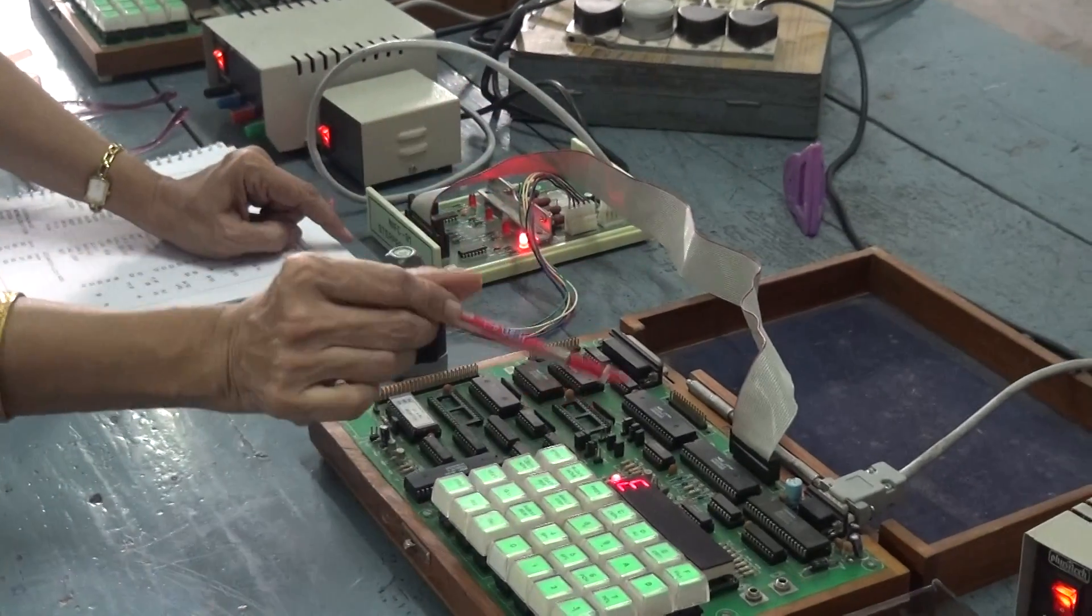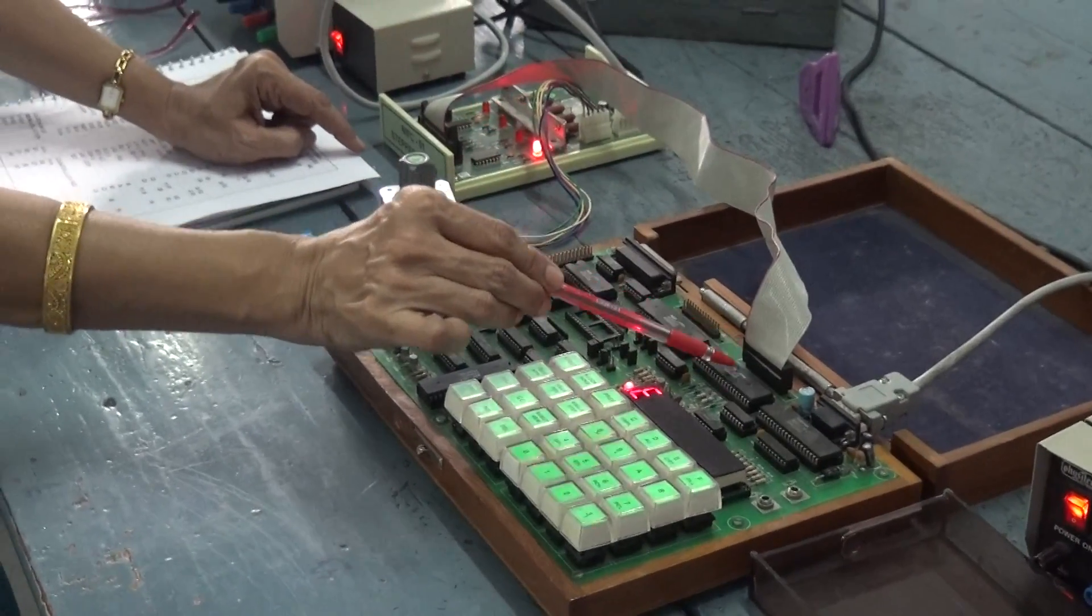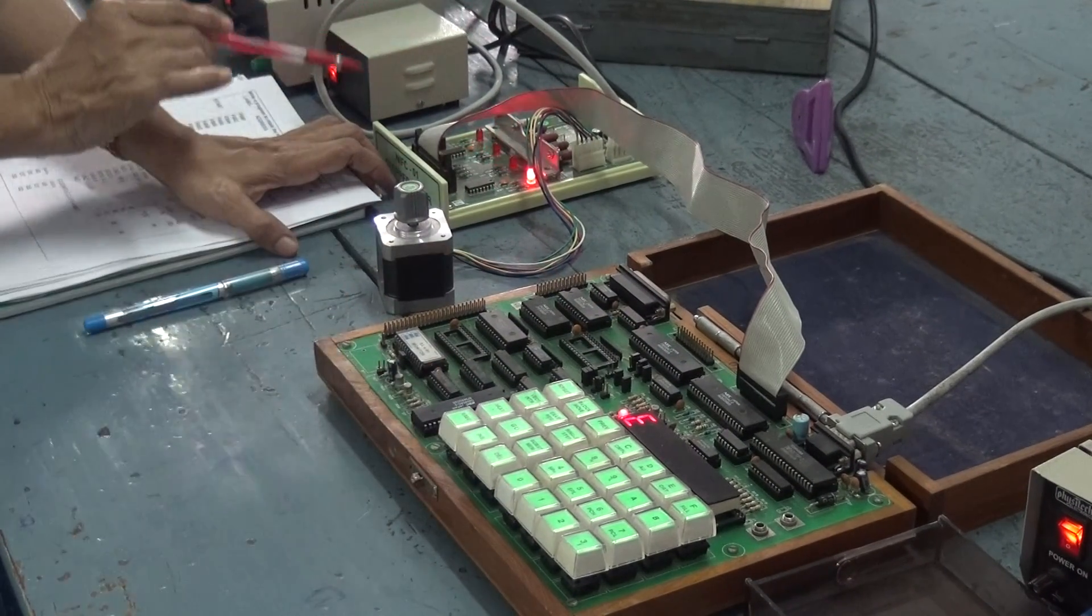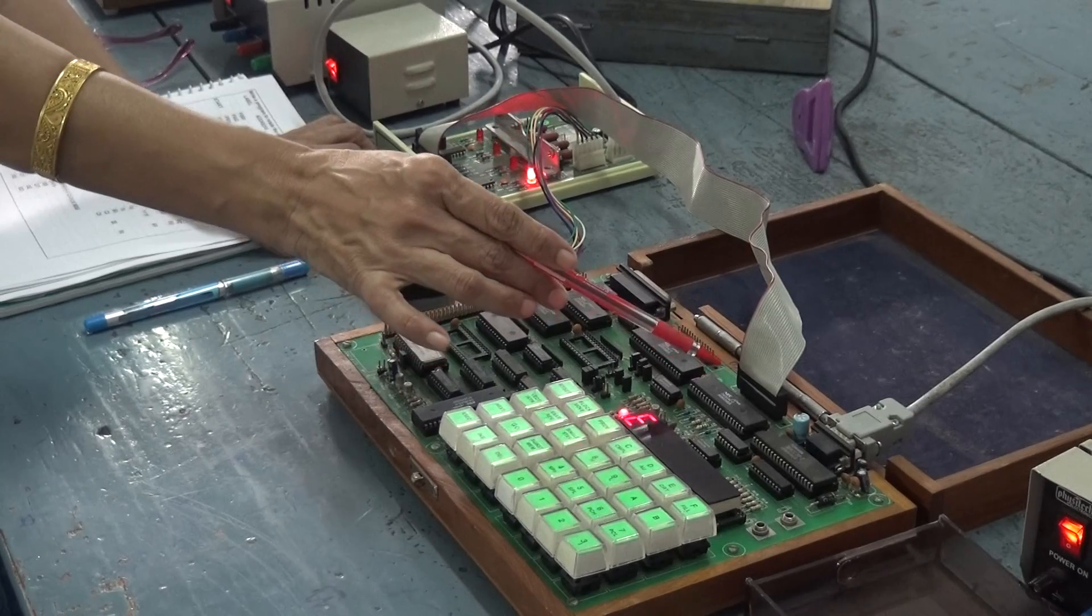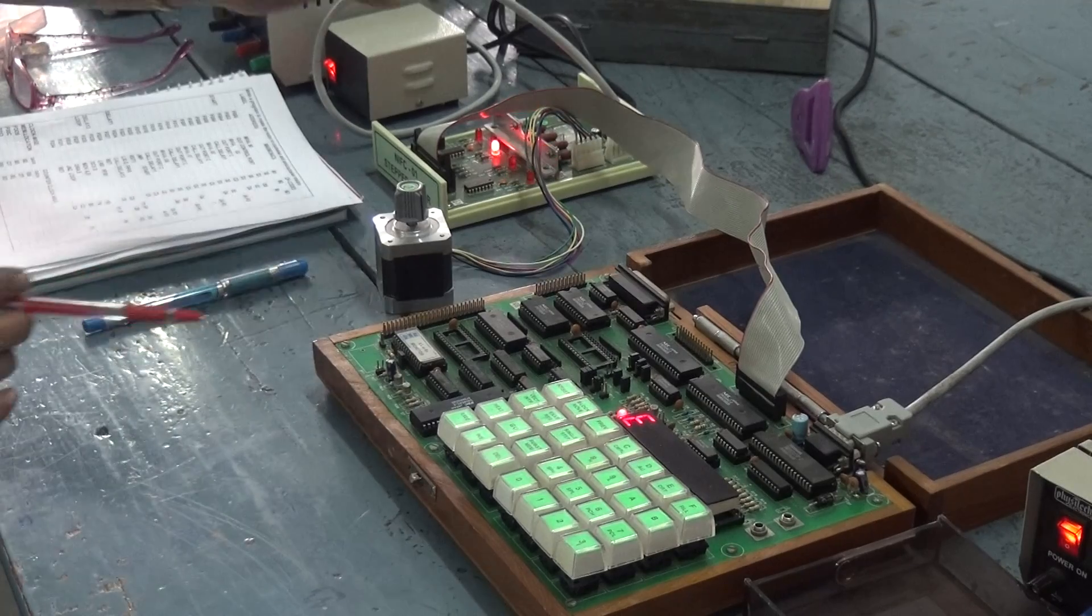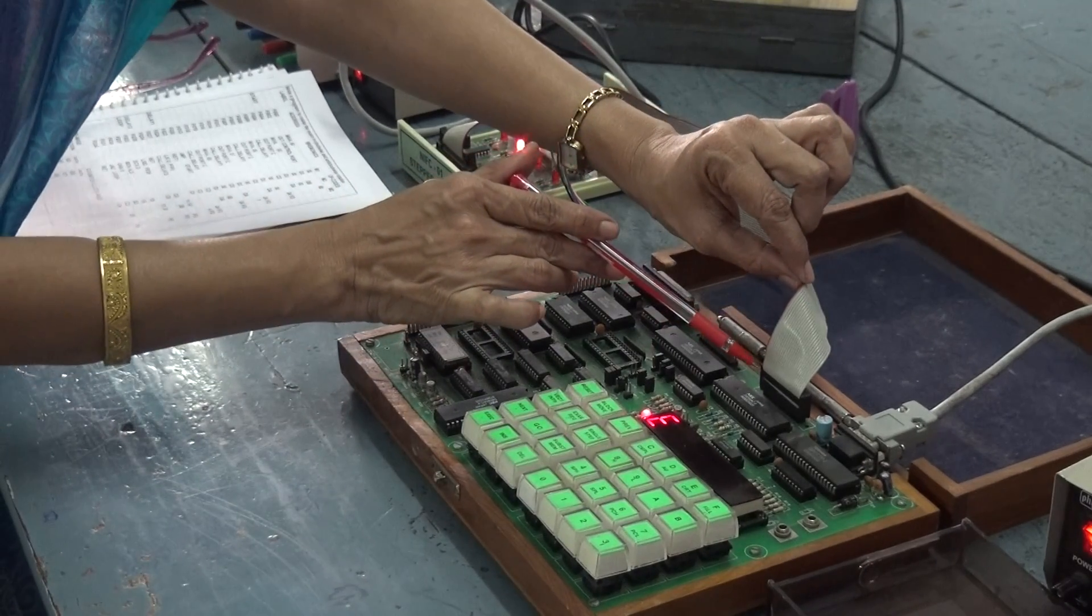Now this is a flat cable connected to 8255. This is another interesting example wherein you are interfacing microprocessor with the stepper motor through your programmable peripheral interface that is 8255. Once again, as we have seen in the earlier case, this is a strap here.